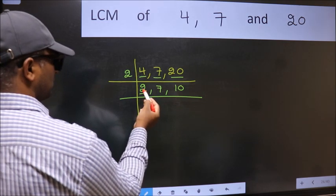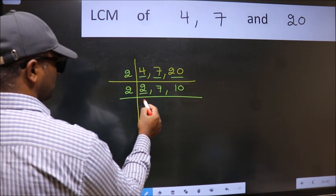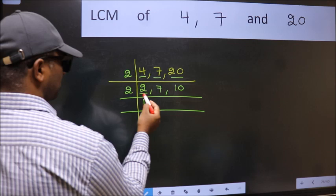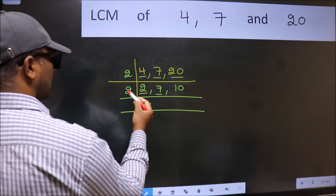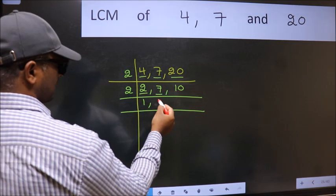Now here we have 2. 2 is a prime number, so 2 once is 2. The other number 7 is not divisible by 2, so we write it down as it is.